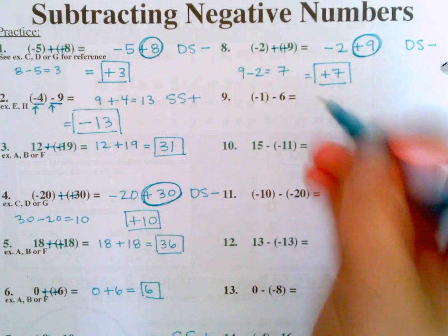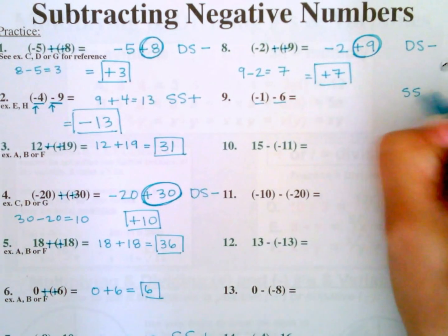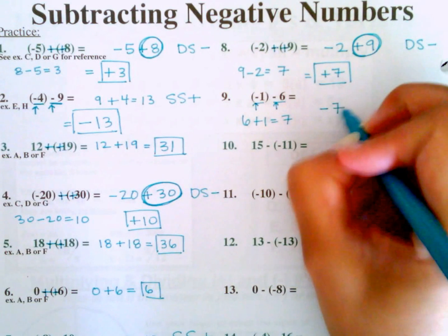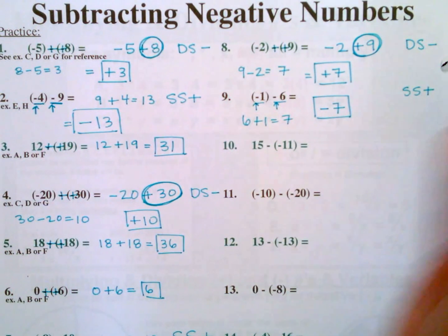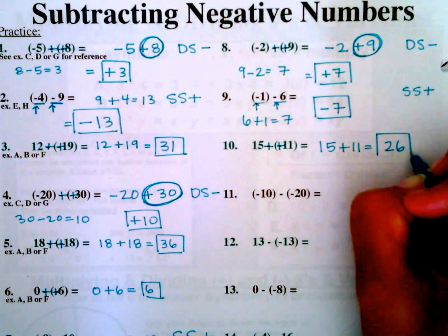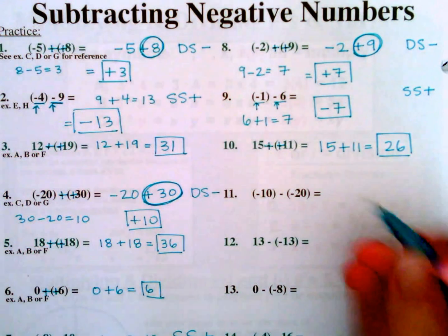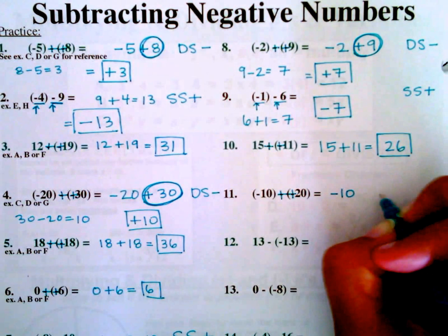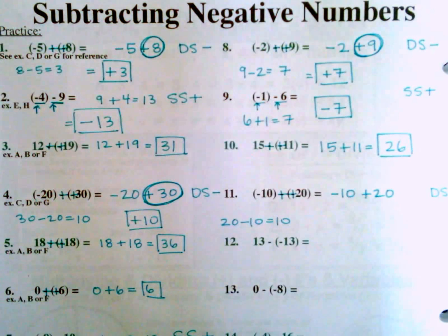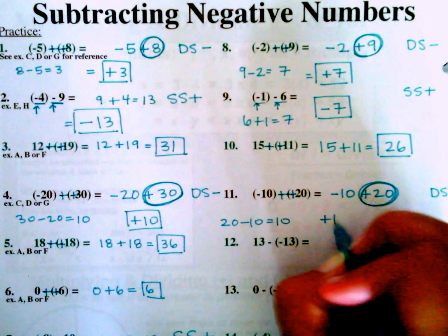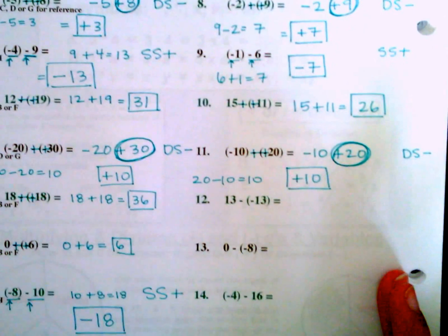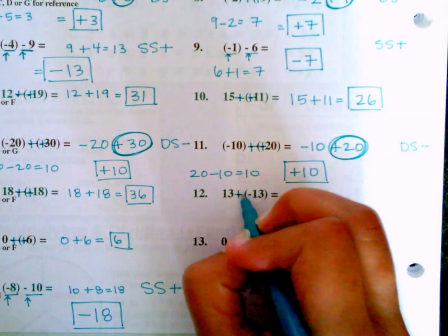Number nine: negative one minus six — same sign, so add: six plus one equals seven, and adding two negatives makes a larger negative, so negative seven. Number ten: fifteen minus negative eleven — minus negative becomes plus positive, so fifteen plus eleven equals positive twenty-six. Number eleven: negative ten minus negative twenty — minus negative becomes plus positive, so negative ten plus twenty. Different signs, subtract: twenty minus ten equals ten. The larger number is positive, so the answer is positive ten.